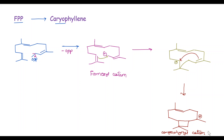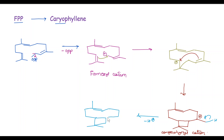In the next step, loss of this H+ takes place, and we get the double bond. This is known as caryophyllene. This is the biogenesis of caryophyllene from FPP.